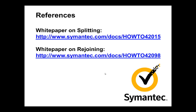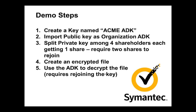For further information, refer to the following two white papers, one on splitting, one on rejoining. This demonstration has five steps. In the first step, we'll create a key named ACME ADK and save the public side of that key to our desktop. Then we'll go into the management interface and import that public key as the organization ADK. We will then come back to the desktop and split the private key among four shareholders, each shareholder getting one share, and require that two shares be brought together in order to rejoin the key. In the fourth step, we'll create an encrypted file. And then last, in step five, we'll use the ADK to decrypt the file. To decrypt it, it will require us to rejoin the key.